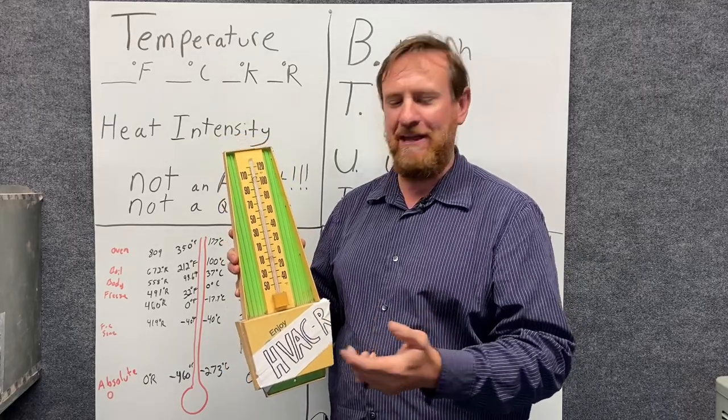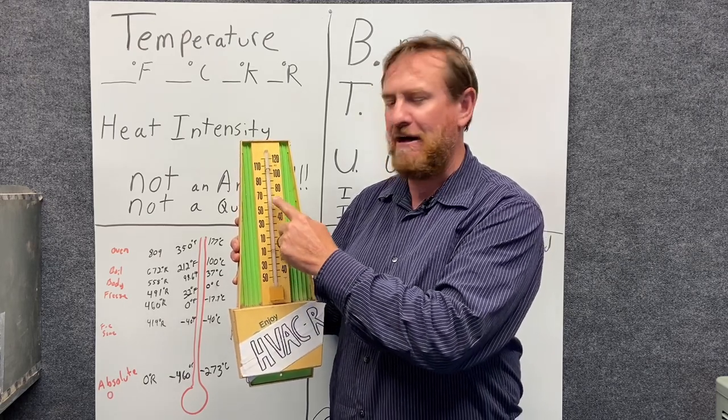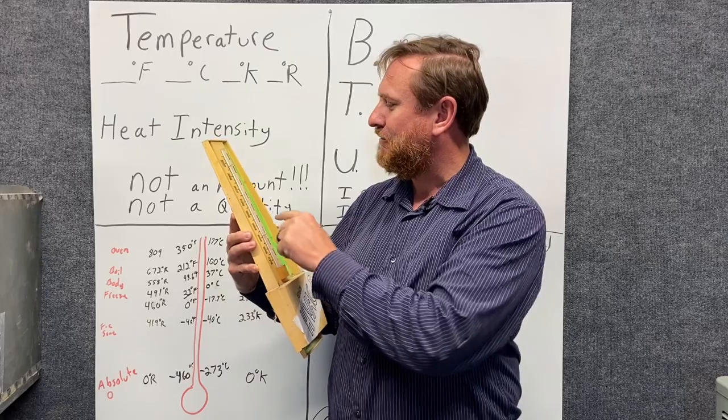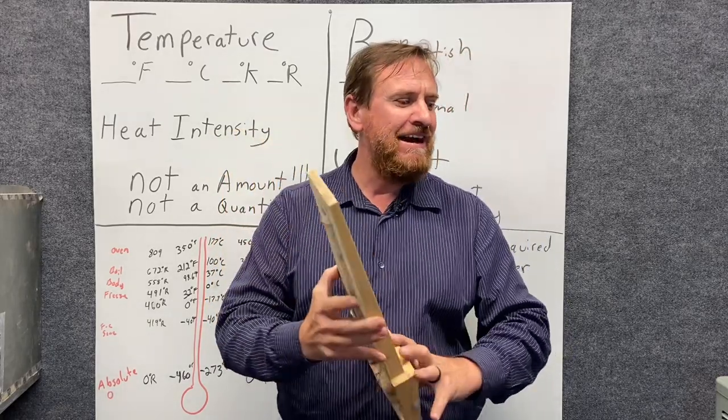In short, you put heat on most things, they expand. We add heat to mercury, the mercury expands out of the bulb and pushes up higher on the thermometer. In this case, right now, it's a little above 60 degrees Fahrenheit on this thermometer.